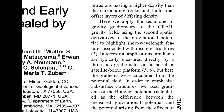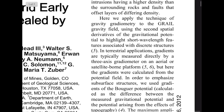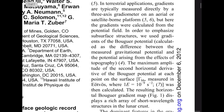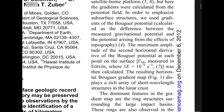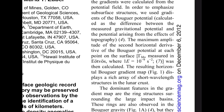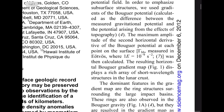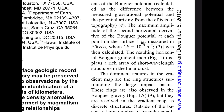In terrestrial applications, gradients are typically measured directly by a three-axis gradiometer or an aerial or satellite-borne platform, but here the gradients were calculated from the potential field. In order to emphasize subsurface structures, we used gradients of the Bouguer potential, calculated as the difference between the measured gravitational potential and the potential arising from the effects of topography. The maximum amplitude of the second horizontal derivative of the Bouguer potential at each point on the surface — measured in Eötvös units where 1E equals 10 to the negative ninth s to the negative second power — was then calculated.